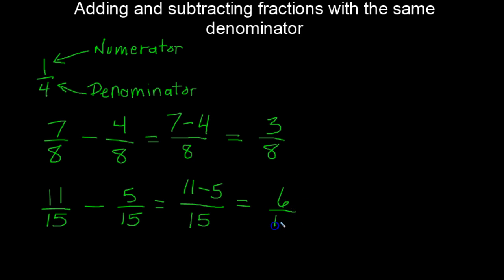In this case, we can reduce or simplify it because three goes into six. We can divide the numerator by three and divide the denominator by three. Six divided by three is two, and fifteen divided by three is five, giving us two fifths. Now this fraction is in simplest form.